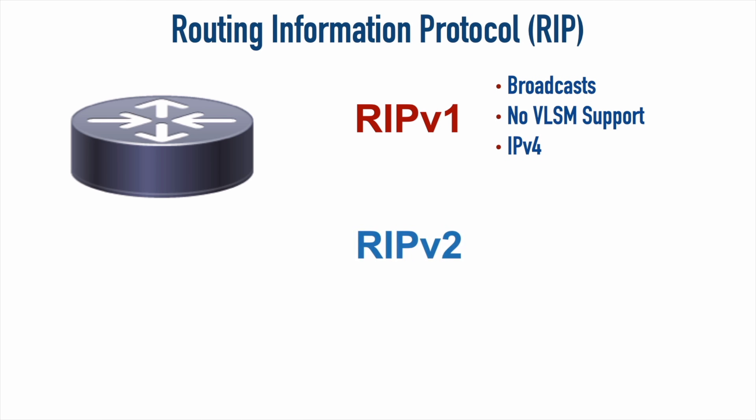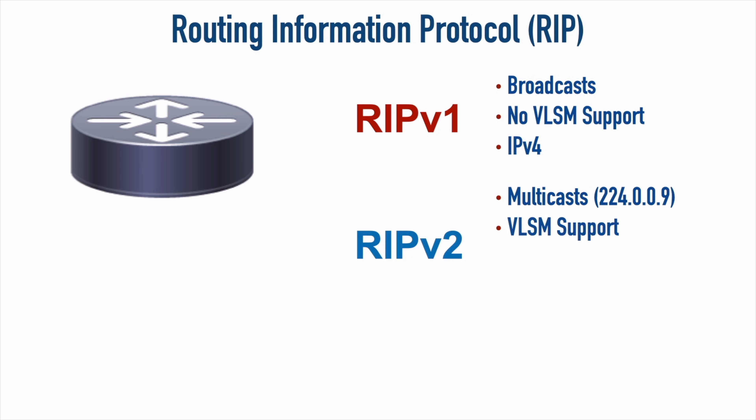Things got a lot better with RIP version 2. Instead of broadcasting everywhere, a RIPv2 router uses multicast, sending advertisements only to other RIPv2-speaking routers that have joined the multicast group with address 224.0.0.9. This version supports Variable Length Subnet Masking and adds authentication, preventing someone from bringing up a rogue router and injecting false routes — something that could happen with RIPv1. However, it still sends the full routing table every 30 seconds and only supports IPv4.